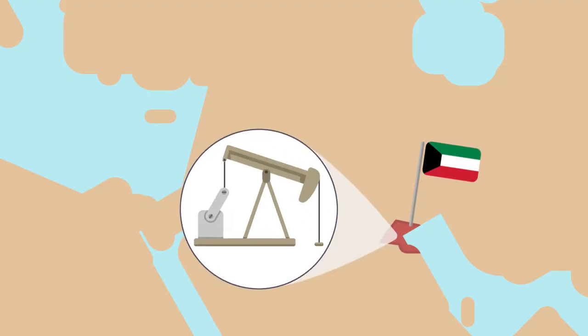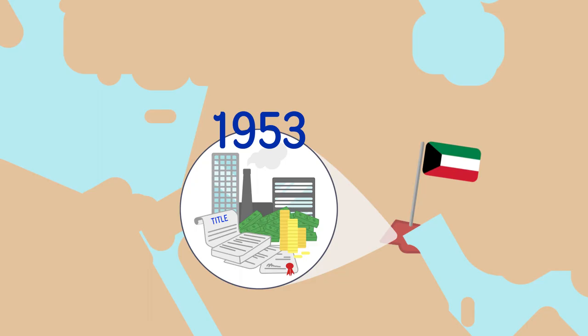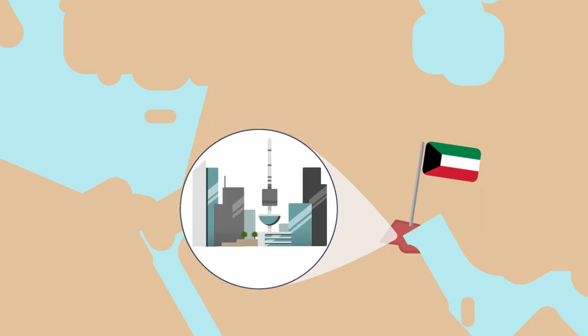The first country in the world to start a sovereign wealth fund was Kuwait. Right after Kuwait discovered oil, it decided to establish a fund in 1953 to invest its excess oil revenues. It soon became one of the wealthiest nations in the world.